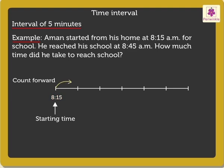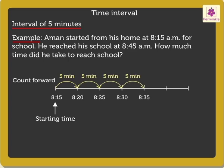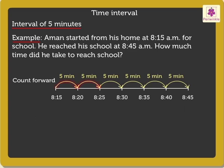On counting forward by 5 minutes from 8:15am, we reach 8:20am, 8:25am, 8:30am, 8:35am, 8:40am, and lastly the ending time, 8:45am. So here we skip counted 6 times at an interval of 5 minutes each. Thus, we get the answer as 6 multiplied by 5 is equal to 30 minutes. Aman took 30 minutes to reach his school.